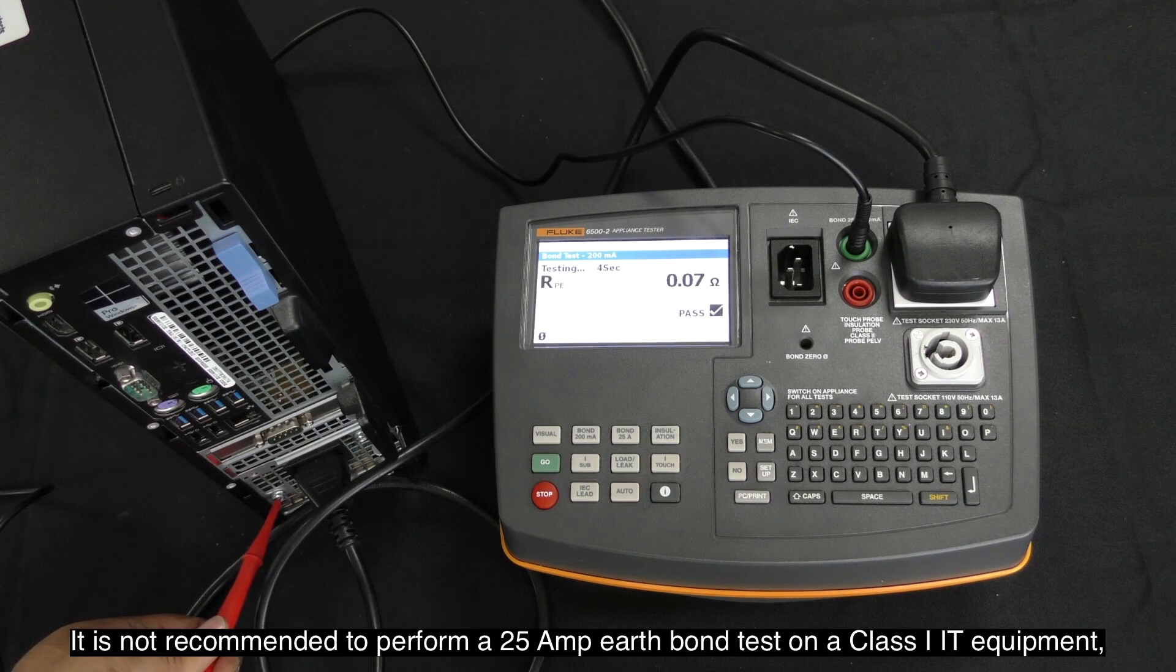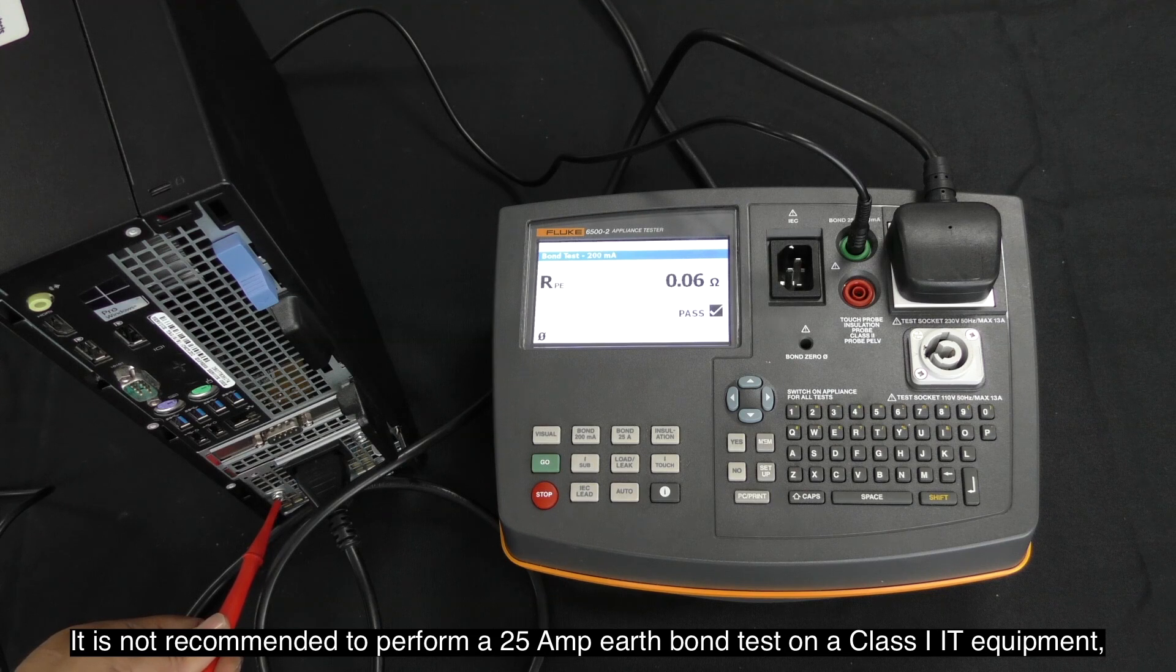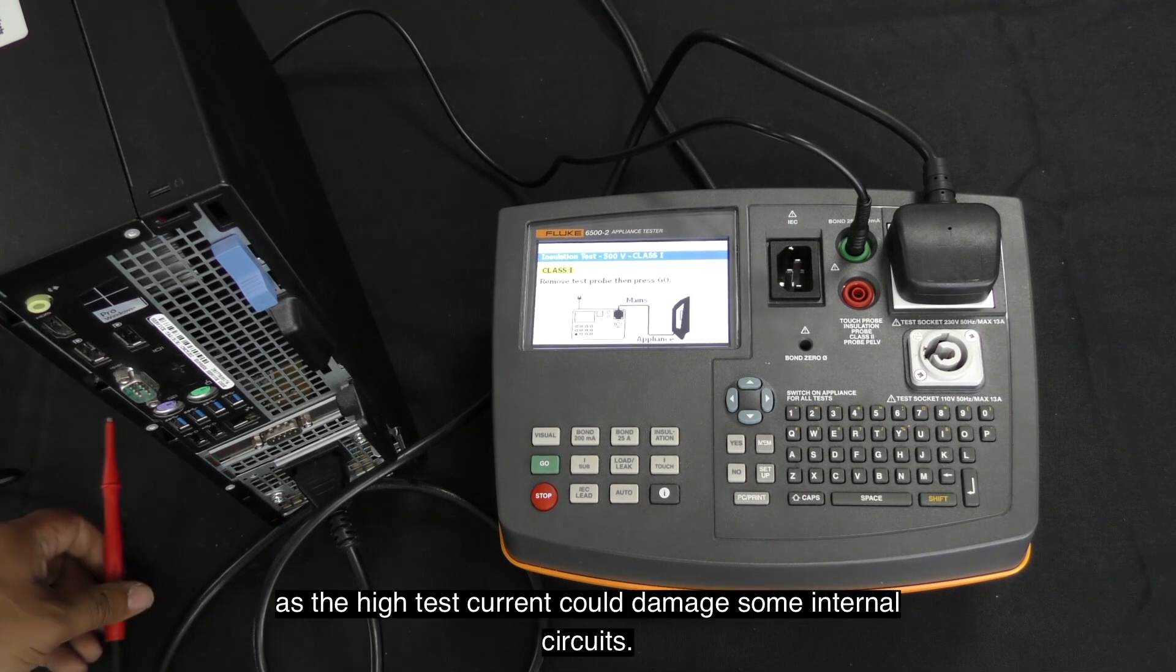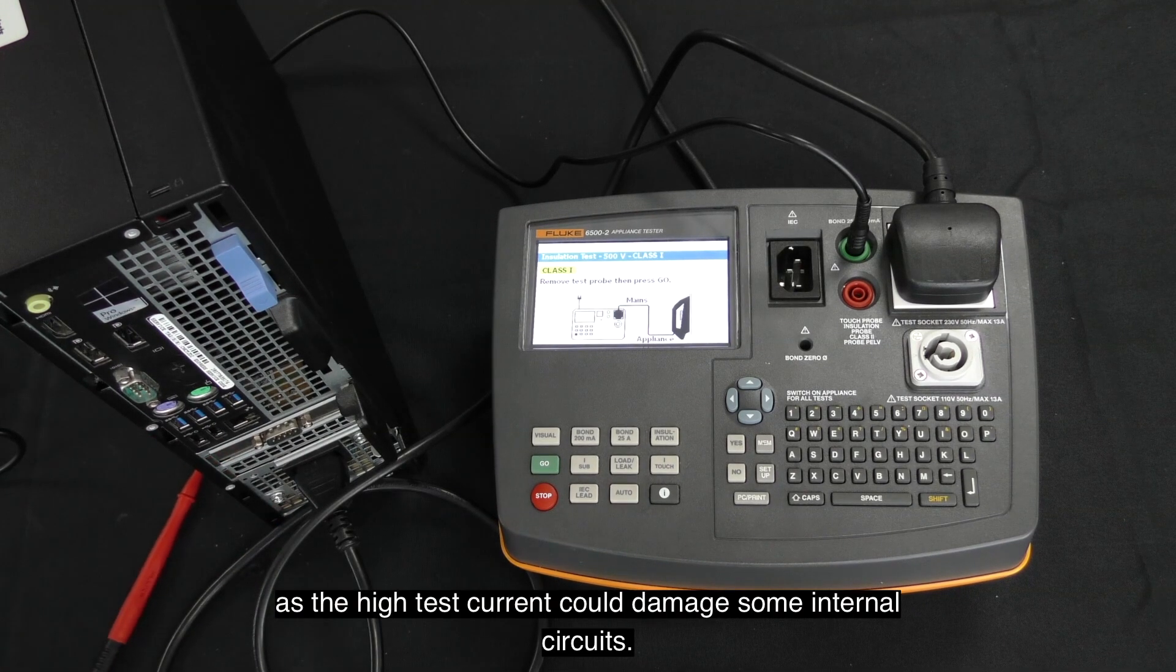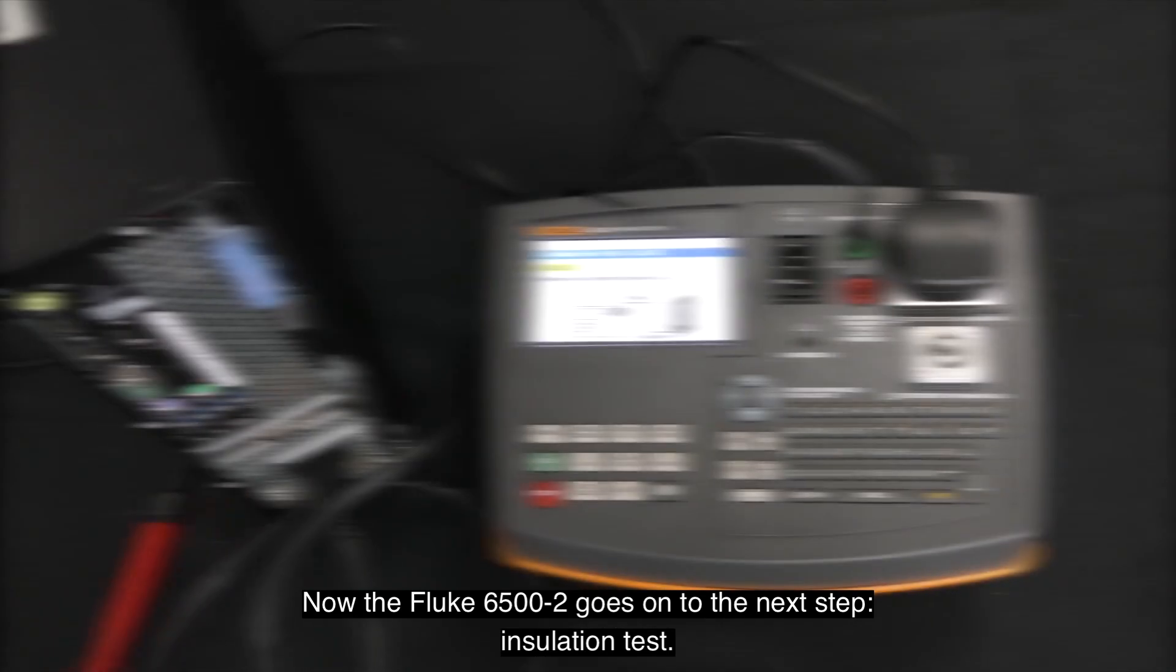It is not recommended to perform a 25A earth bond test on Class 1 IT equipment, as the high test current could damage some internal circuits. The Fluke 6500 Mark II goes on to the next test step, the insulation test.